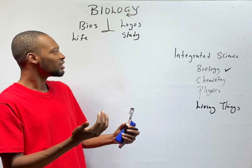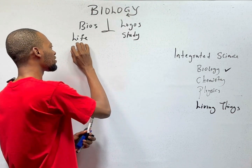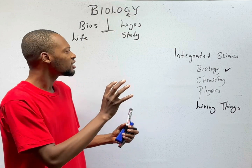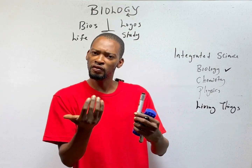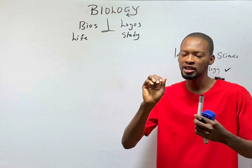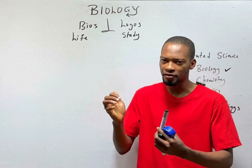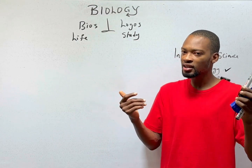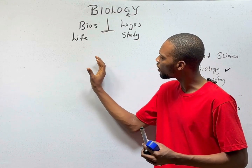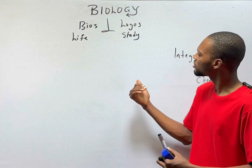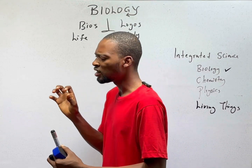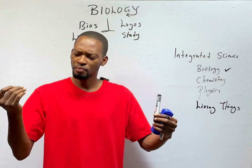Now, what are living things? Living things are things that have life. This is one of the characteristics of living things — in fact, this is a characteristic that encompasses other characteristics of living things. For something to be classed as living, it needs to possess certain characteristics, which we will address in the next class. We are still in the introductory part of biology. Biology is the study of living things; it is the study of life. Living things can be grouped into basically two.